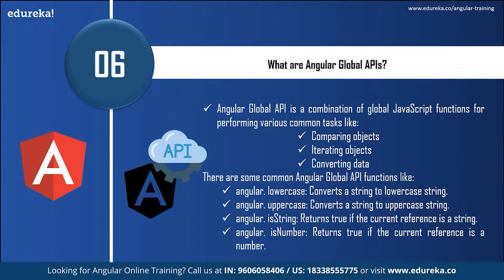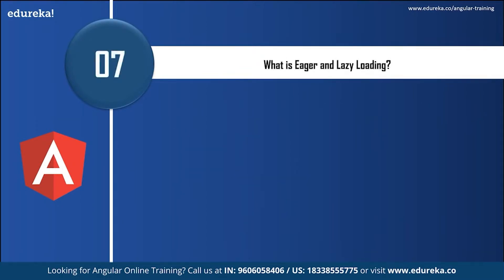What are Angular global APIs? Angular global API is a combination of global JavaScript functions for performing common tasks like comparing objects, iterating objects, and converting objects. Common Angular global API functions include: angular.lowercase — converts a string to a lowercase string; angular.uppercase — converts a string to an uppercase string; angular.isString — returns true if the current reference is a string; angular.isNumber — returns true if the current reference is a number.